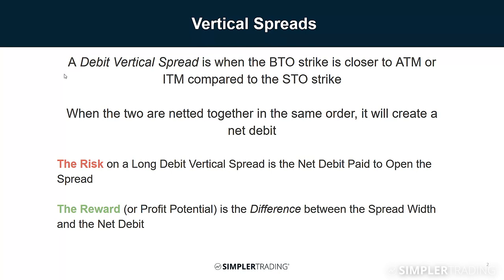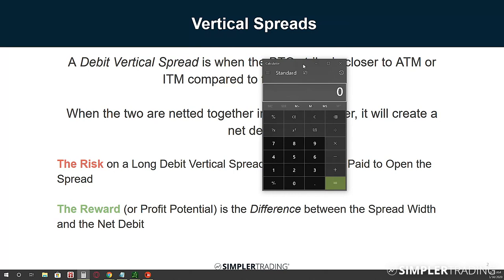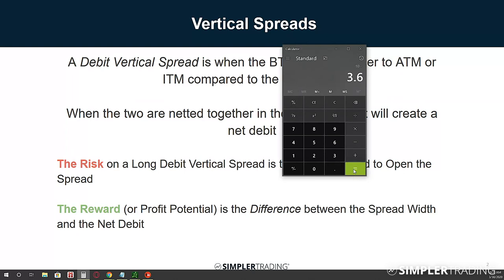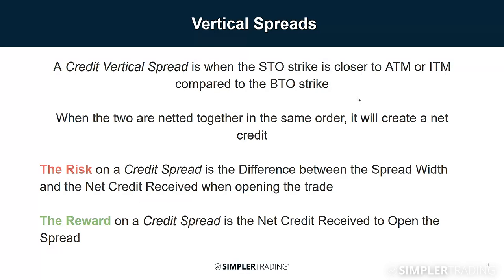The risk on a long debit vertical spread is the net debit paid to open the spread - whatever you pay to enter the trade is your ultimate risk per contract. The profit potential is the spread width minus the net debit. For example, if we jumped into a 10-point spread on SPX and paid $3.60 for it, our risk is $3.60 and our profit potential is $10 minus $3.60, which equals $6.40 per contract.